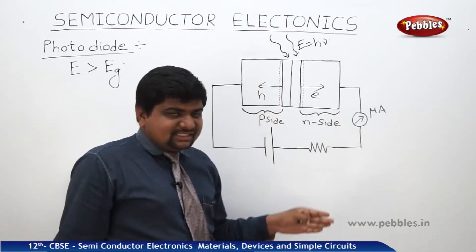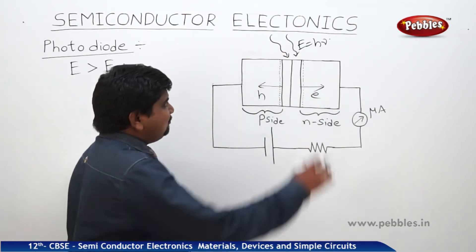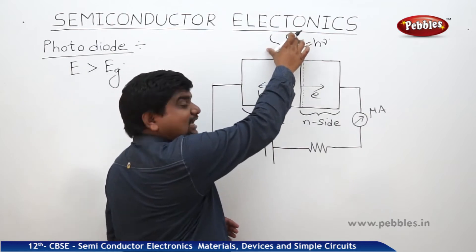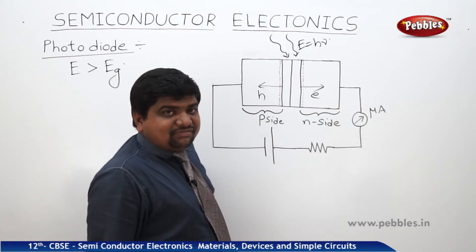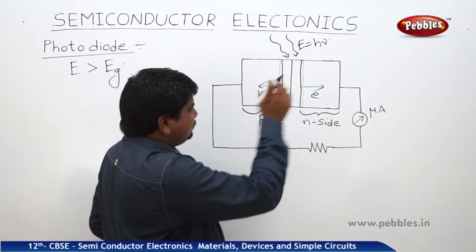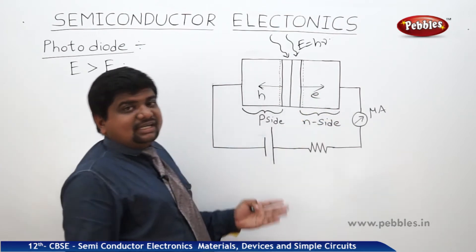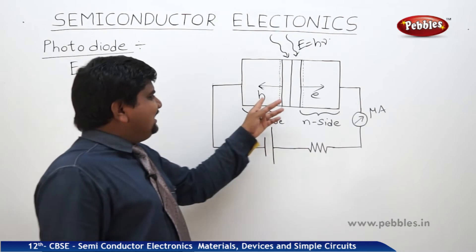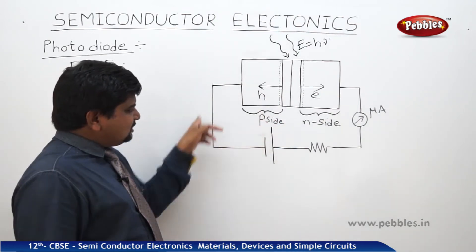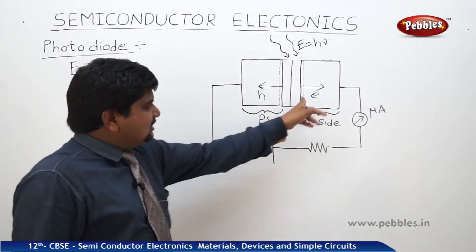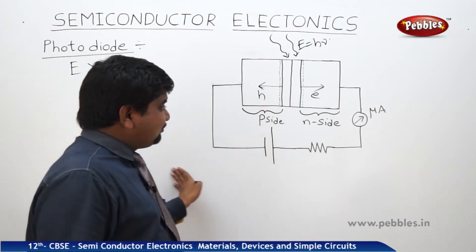Before the recombination, there is a transfer of holes to the P side and a transfer of electrons to the N side because of the applied energy at the depletion region — nothing but the gap between the P and N type semiconductors. In this case, the EMF at the two sides will increase rapidly. Once the EMF increases, the holes are connected to the negative terminal and the electrons, through a load resistor, are connected to the positive terminal, and thus the current flows.